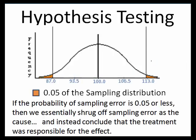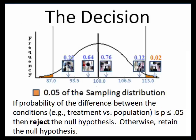In the behavioral sciences, we set our decision criterion at 0.05. That is, if the probability is 0.05 or less, we'll go ahead and reject the null hypothesis. Rejecting the null hypothesis means we're ruling out sampling error as a cause and instead concluding that the treatment was responsible for the effect. Specifically, if the probability of the difference between the treatment and population conditions is 0.05 or less, we reject the null hypothesis; otherwise, we retain it.